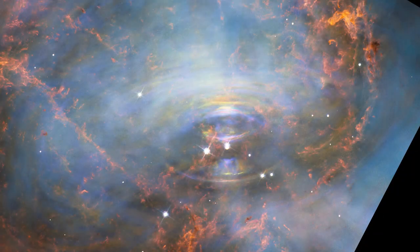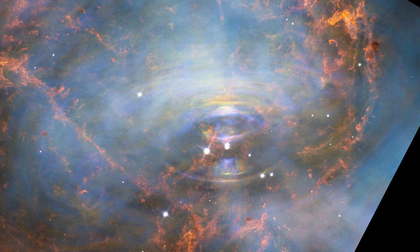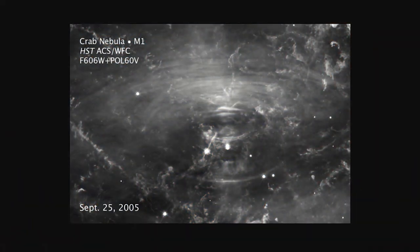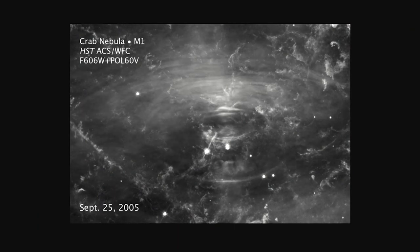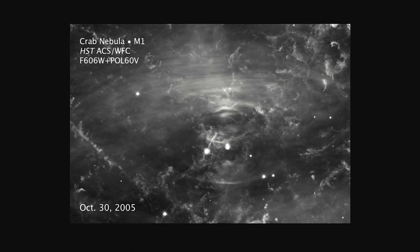At first glance this image might seem like any other images of a nebula that we have seen in the past. It is only when pictures taken over a period of months and years are put together to form a movie we see the nebula is dynamic with ripples emanating from its center.